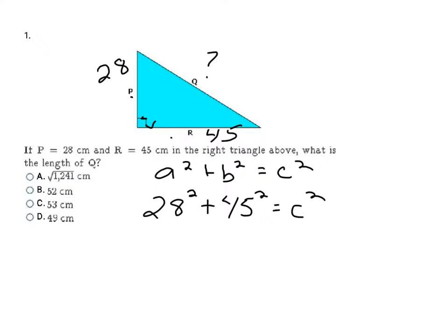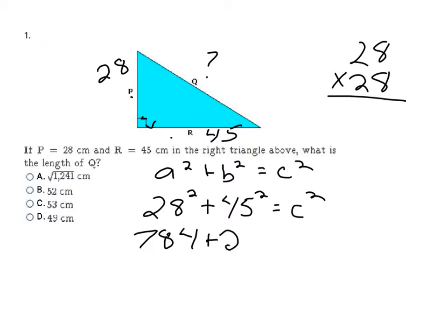To solve this, I'm going to have 28 squared plus 45 squared equals C squared. Remember, squared means you multiply it times itself — not 28 times 2. Make sure you do 28 times 28. When you work that out, you get 784. And then 45 times 45 is 2,025. That still equals C squared. Then I add these two numbers together, and it gives me 2,809 equals C squared.